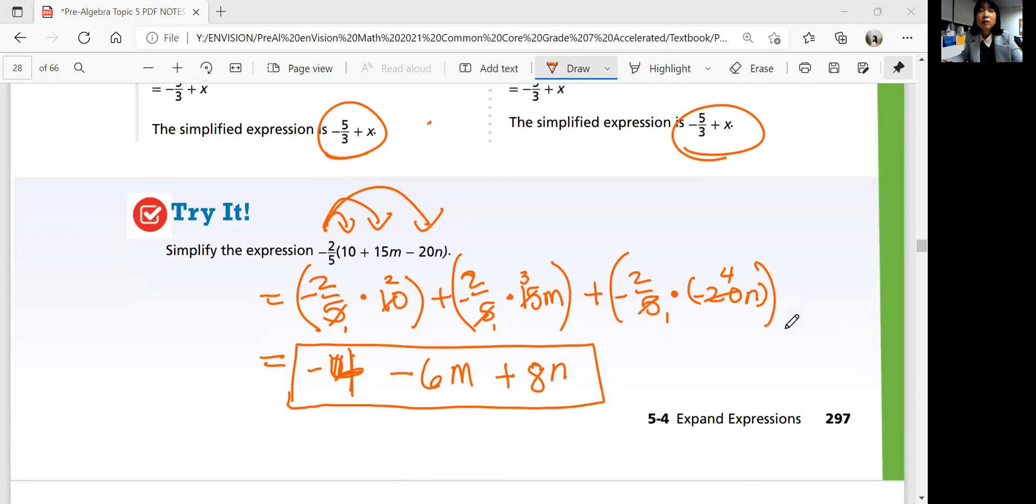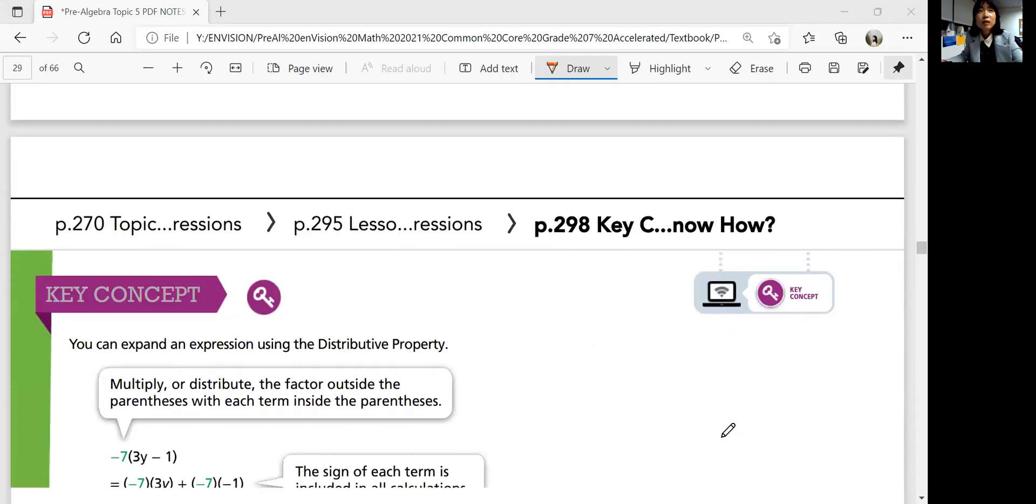So simplify using distributive property. See if there's any like terms. If you see them, then you combine them. If you don't, just leave it like that. Okay, that was lesson 5-4, expanding expressions.